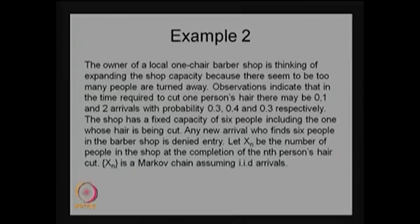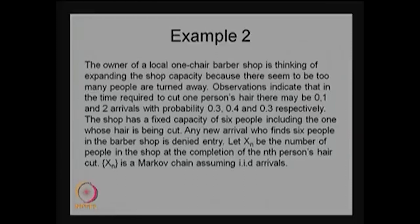This information is very important: during one person's haircut, the probability that no people turn up is 0.3, one person may turn up with probability 0.4, and there is a possibility of two arrivals during one person's haircut with probability 0.3. Therefore the summation of probabilities is 1. During one person's haircut these are the only three possibilities: zero arrivals, one arrival, or two arrivals.